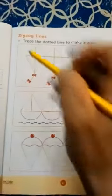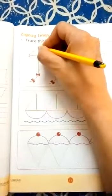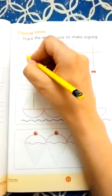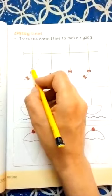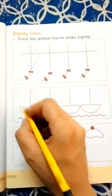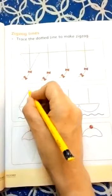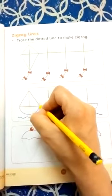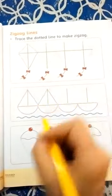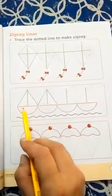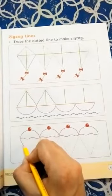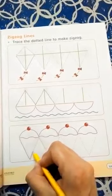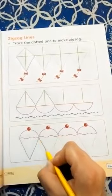Now we will trace the dots. Zigzag line. This is the shape of a kite. These are boats and this is zigzag lines. In the third picture, we will trace the cone, and these are zigzag lines.